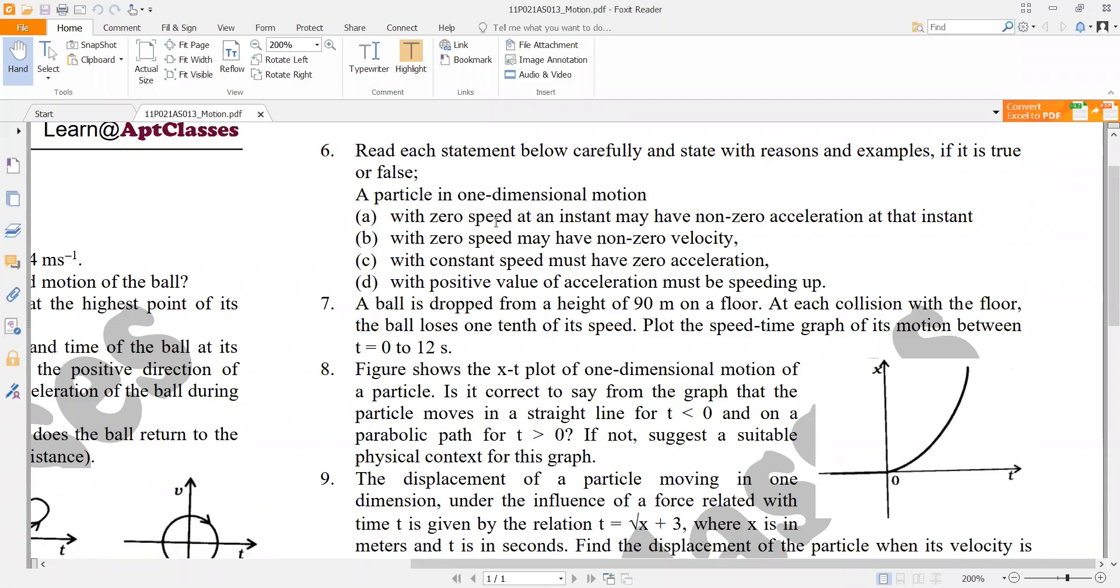So can we see a body where its speed is zero but its acceleration is not zero? Does this happen?